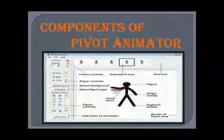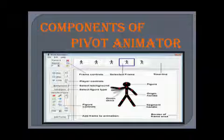Next is Background — this button allows you to add a background to the frame. Next is Add Figure — this button allows you to add another figure to the frame. Figure Other Controls is a group that has various buttons to edit the figure. And the last is Add Frames — this button adds the recently edited position of the figure to the timeline.